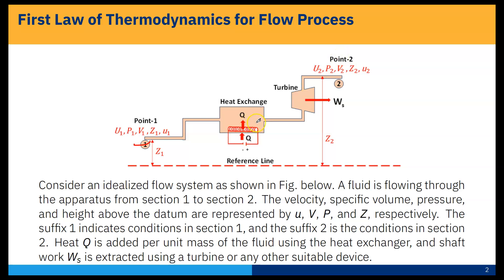Heat Q is added per unit mass of the fluid using the heat exchanger. One heat exchanger is connected to this line, so heat is added through this heat exchanger. Shaft work Ws is extracted using a turbine or any other suitable device. If I take this as a control volume and do the balance, it will be going here and this is also coming from outside.